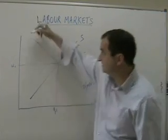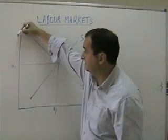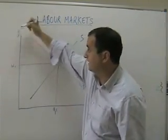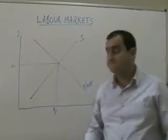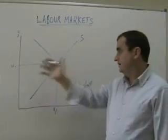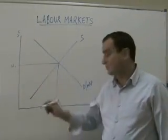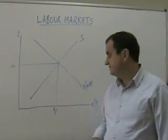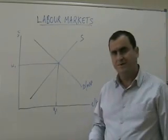Here we have the employment axis, this is the price of labour — the wage rate axis. So wage rate is W1 and quantity employed Q1.